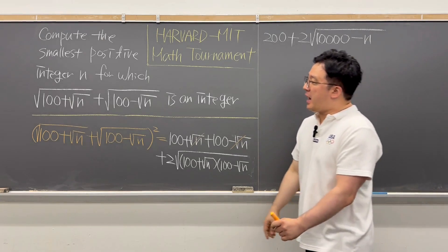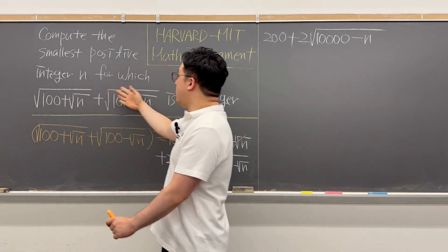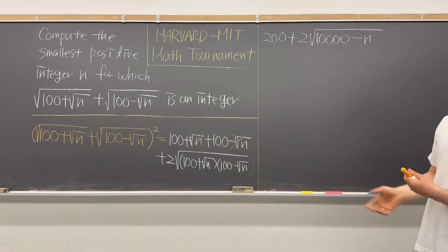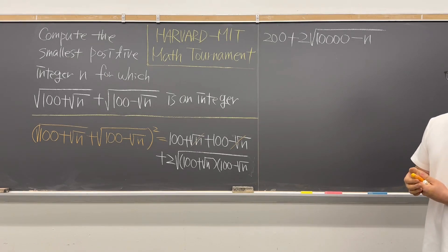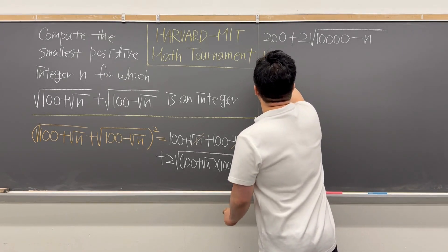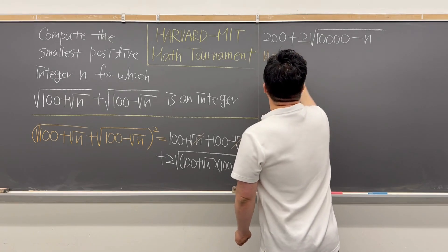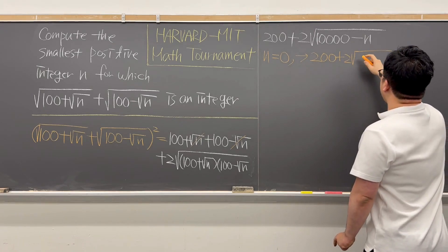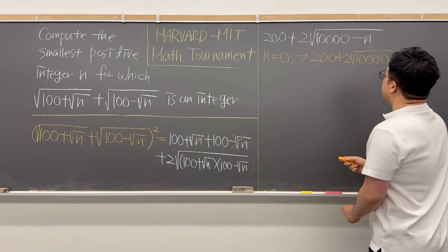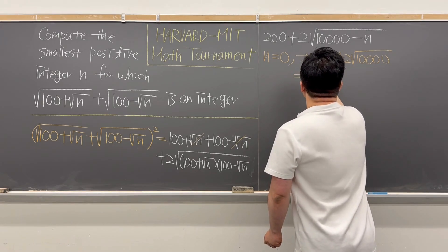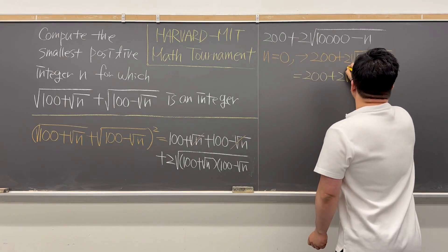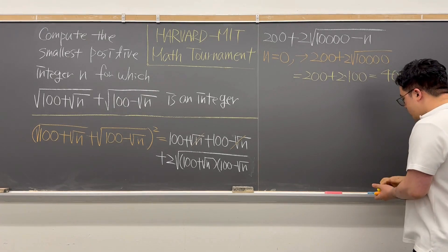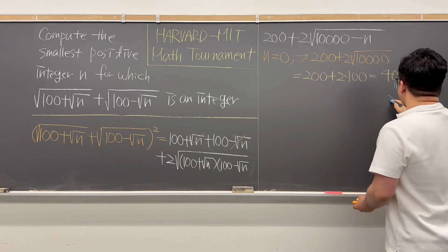We're looking for a positive integer n that makes this an integer. So let's plug in n=0 to establish a bound. If n=0, we get 200 plus 2 times the square root of 10,000, which equals 200 plus 2 times 100, which equals 400. And 400 is a perfect square — it's 20 squared.